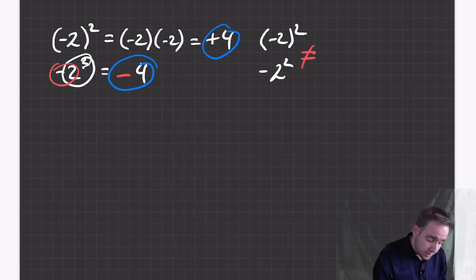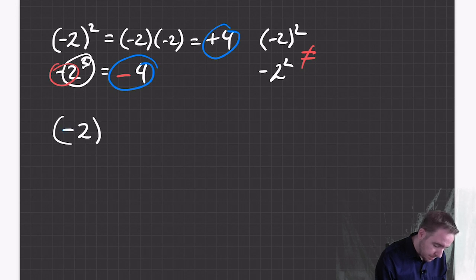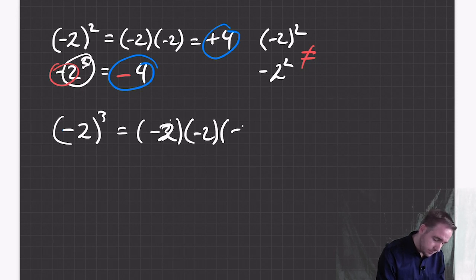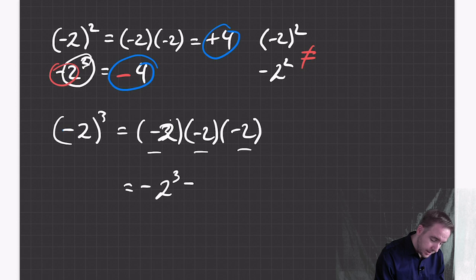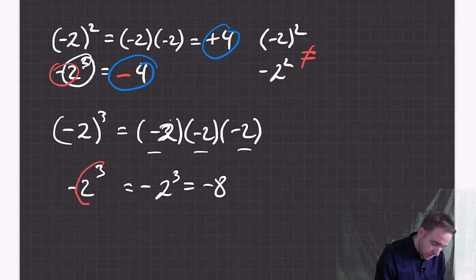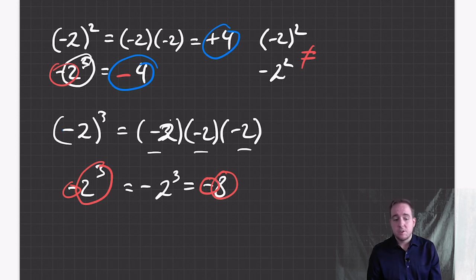Also remember that if there's an odd number of negatives — so negative two to the power of three — that will be three of these twos multiplied and there will be three negatives, so the answer will be negative eight. Having the brackets there matters, so it's important not to rush when you're doing those things.